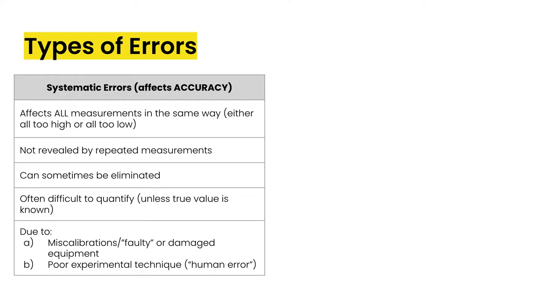So they really do two sort of main things. First is miscalibrations or faulty or damaged equipment. So maybe you're using a stopwatch, but it's always running two seconds slow. Or maybe you're using a pH meter that hasn't been calibrated properly.